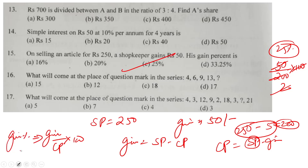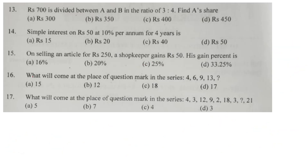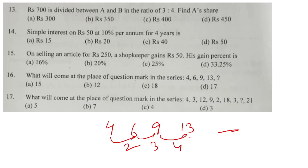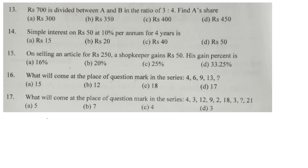Question number 16: what will come in place of the question mark in the series 4, 6, 9, 13, dash? The differences are 2, 3, 4 — so the next difference is 5, making the answer 18. So 18 is our correct answer.